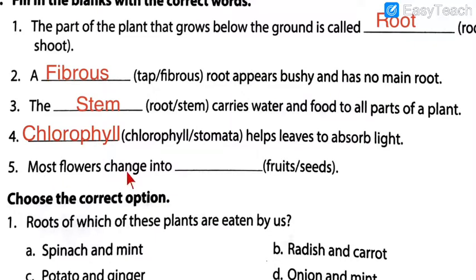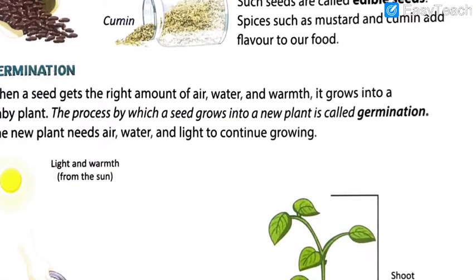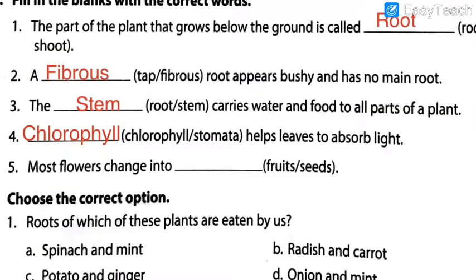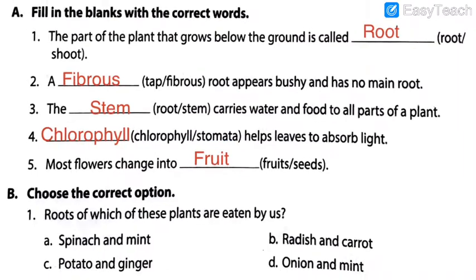The last fill in the blank: Most flowers change into dash. As you can see in this diagram, most flowers change into what? Into fruit. So fruit is the answer. Let us write the answer — fruit is the answer. I hope that you have also written the answer.